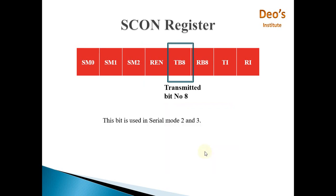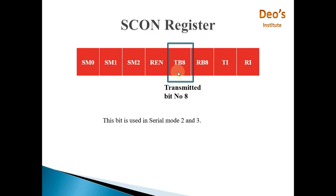The next bit is Transmitted Bit Number 8 (TB8). It is used in serial modes 2 and 3, where it is 9-bit UART mode, meaning data is 9-bit. The 9th bit to be transmitted will be stored in TB8, because the capacity of SBUFF is only 8 bits. So the last extra bit to be transmitted is stored in TB8.